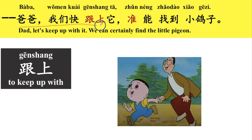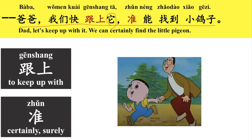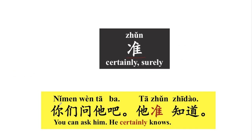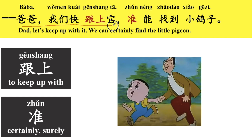爸爸，我们快跟上他，准能找到小鸽子。好，这个准，准就是certainly, surely，就是一定。你们问他吧，他准知道。You can ask him, he certainly knows. 他准知道就是他一定知道。找到，这个到 is a complement after the verb 找, it indicates the result: to find.